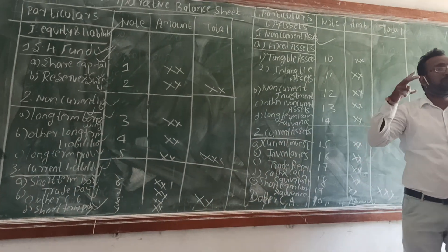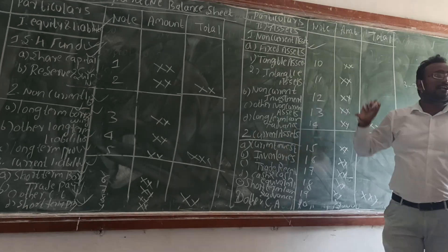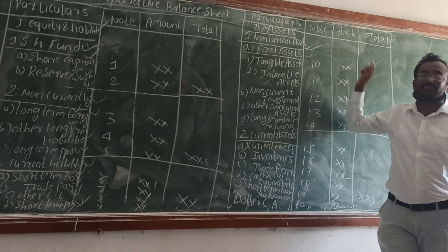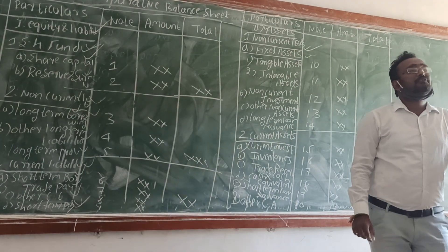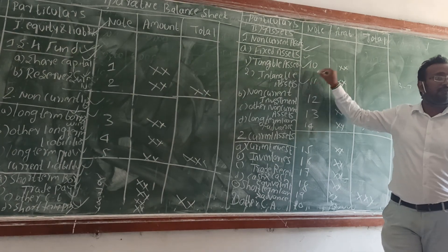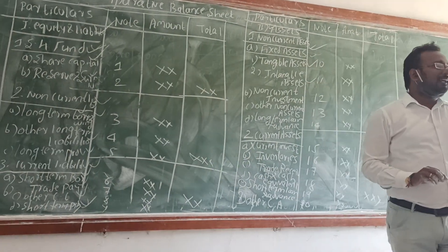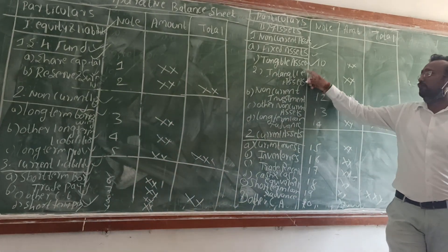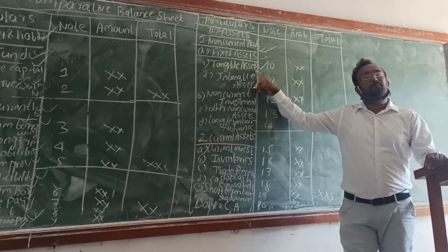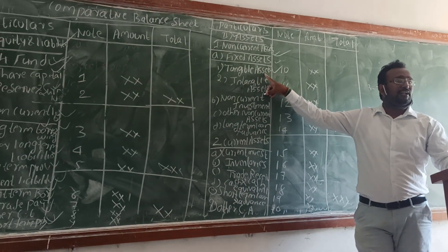In assets, there are usually two types of assets. Number 1 is non-current asset. In the case of non-current asset, it is again divided as fixed asset. Fixed asset is further divided as: one, tangible asset; and another, intangible asset. In the case of tangible asset, it includes land and building, furniture and fixtures, plant and machinery, and so on.